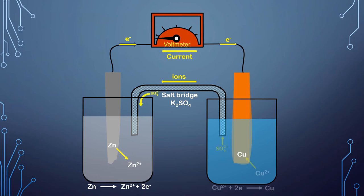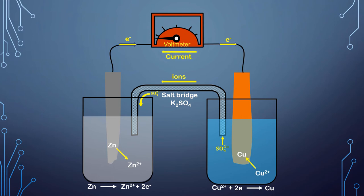The copper rod gains weight due to the reduction of the Cu²⁺ ions in the solution, and the concentration of sulfate ions increases in the right-hand side beaker. To maintain electrical neutrality, the sulfate ions from this beaker must enter into the salt bridge and combine with the cations — that is, the potassium ions. Thus, the salt bridge also helps in maintaining electrical neutrality of the solutions in the two half cells.